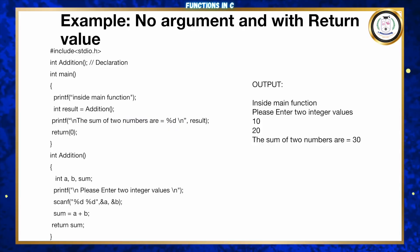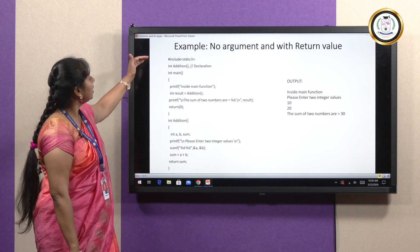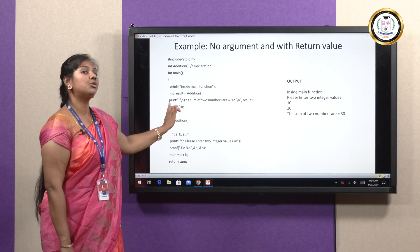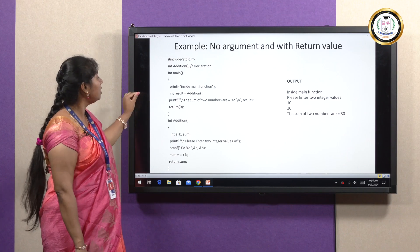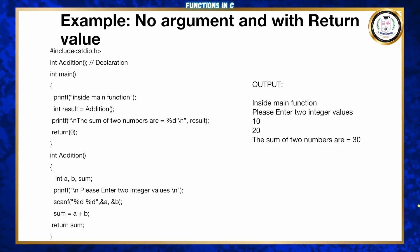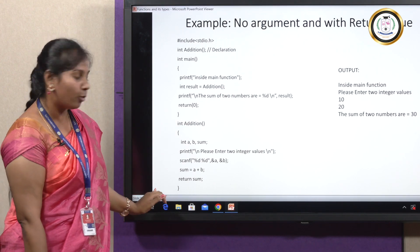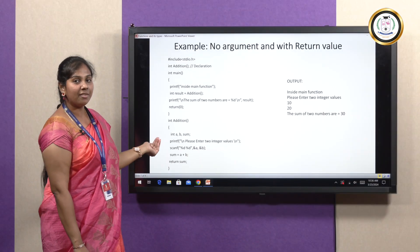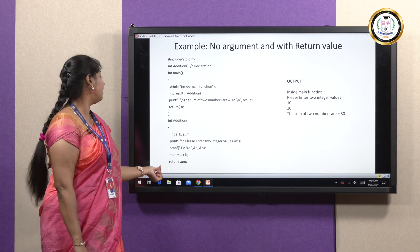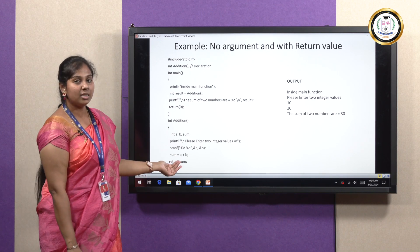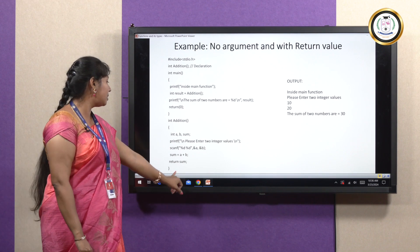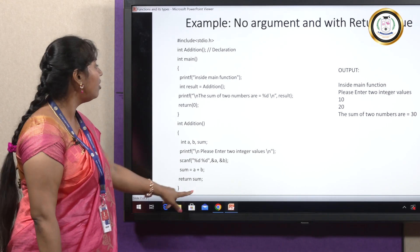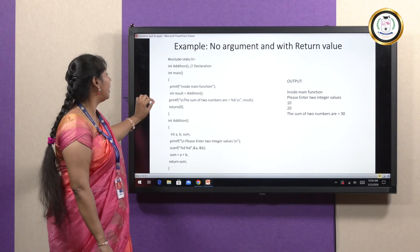The second type has no arguments but has a return value. Everything up to the printf in main is the same. Here I have created a variable called result, which will call the addition function. I am not passing any value to the addition function. When this line executes, the addition function is invoked. Inside it, I have three variables — a, b, and sum — and I get values from the user through printf and scanf. The values are added and saved in sum, which is then returned to the main function via the statement 'return sum'. Since sum is an integer, the return type is specified as int. The sum is saved in result and when printed, the added value computed in the user-defined function is displayed.